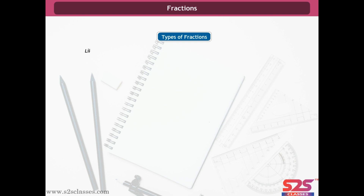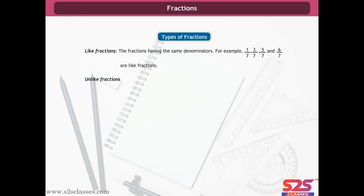Types of fractions. Like fractions are fractions having the same denominators. For example, 1/7, 3/7, 5/7 and 6/7 are like fractions. Unlike fractions are fractions having different denominators, such as 3/5, 2/7, 11/15, etc.